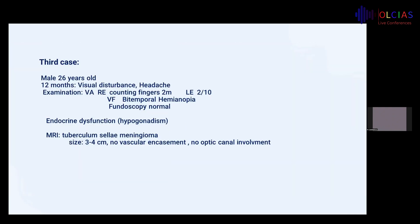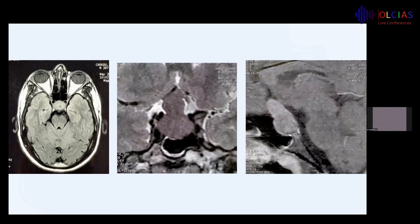The third case is a 26-year-old male complaining for one year of visual disturbance and headache. On examination, visual acuity on the right side was counting fingers at 2 meters, and on the left side 2/10. Visual field showed bitemporal hemianopia and fundoscopy was normal. Endocrine workup revealed hypogonadism. MRI showed a tuberculum sellae meningioma, 3 to 4 cm, without vascular encasement and no optic canal involvement, shown on axial, coronal, and sagittal views.